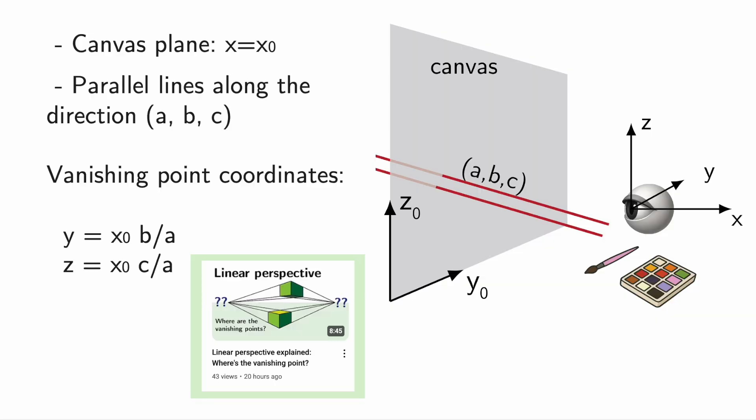Hi everyone! In the previous video about linear perspective I derived the formula for vanishing points of parallel lines. Here it is.